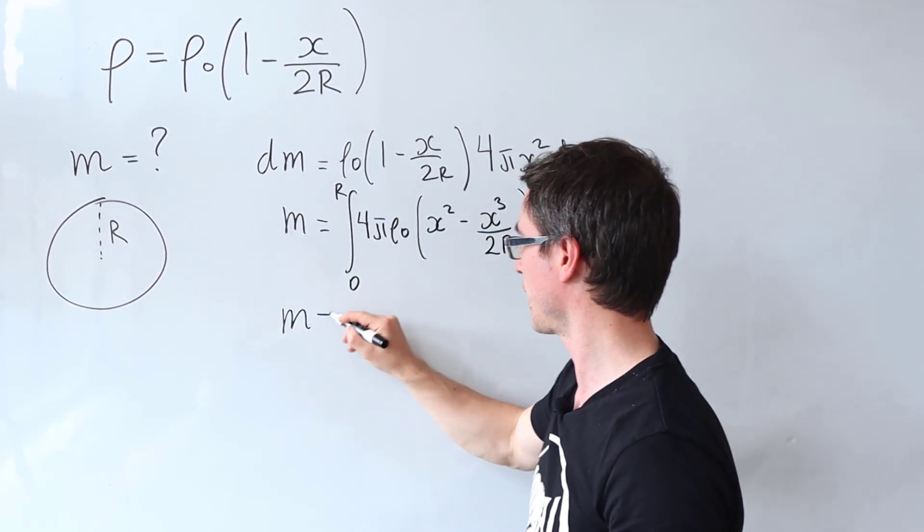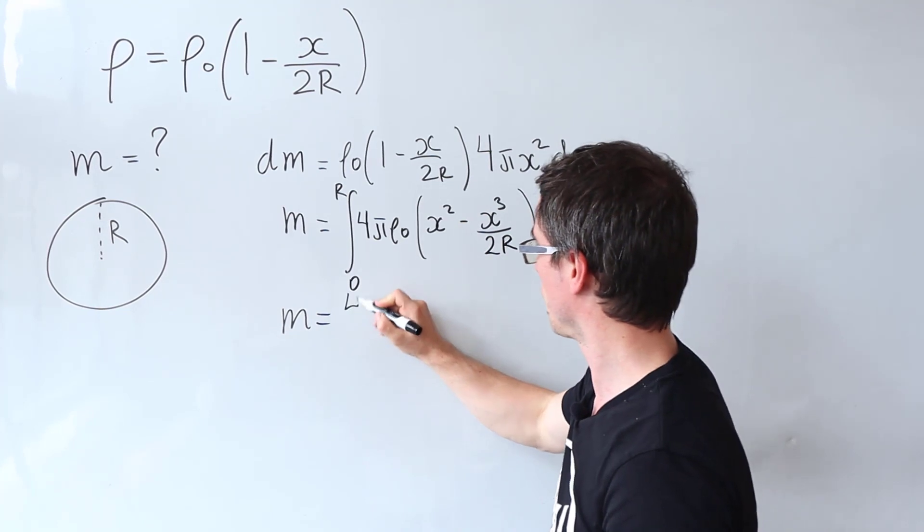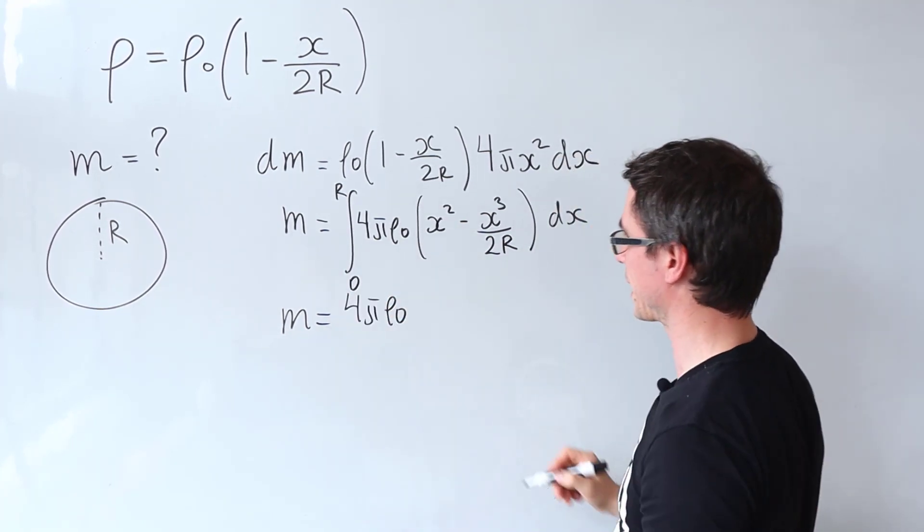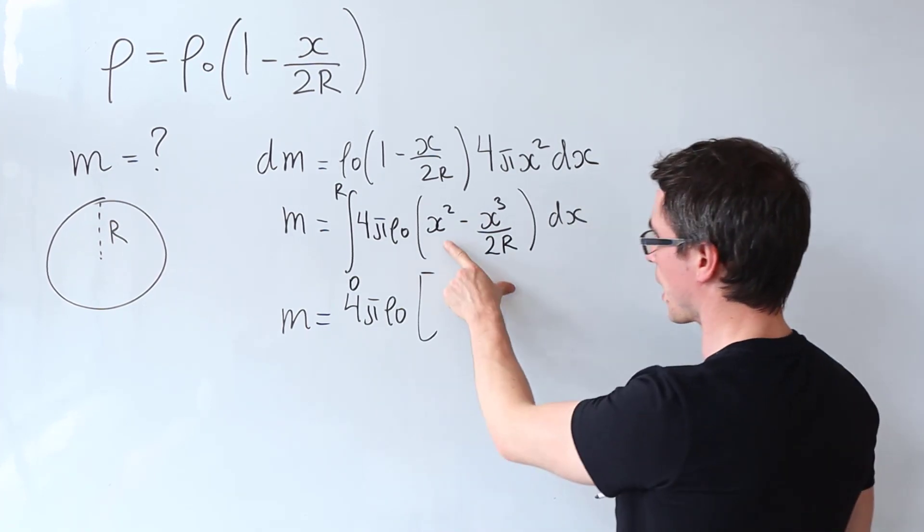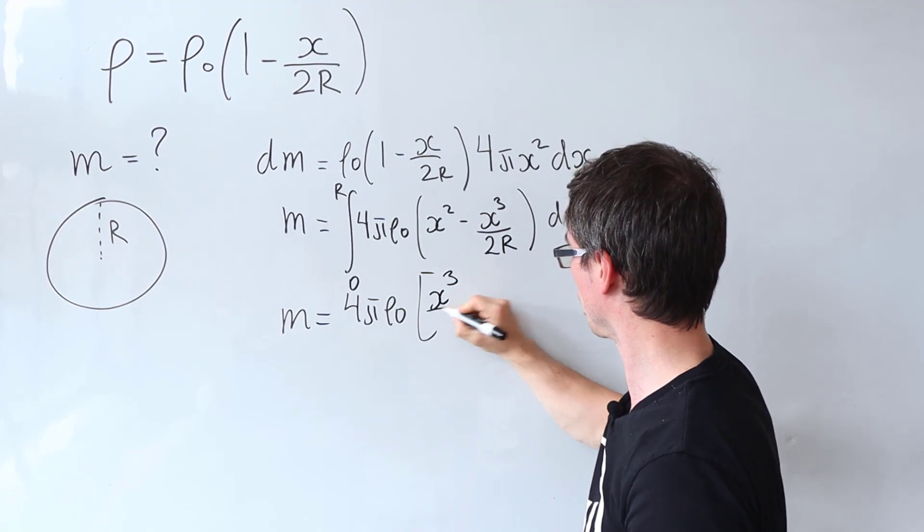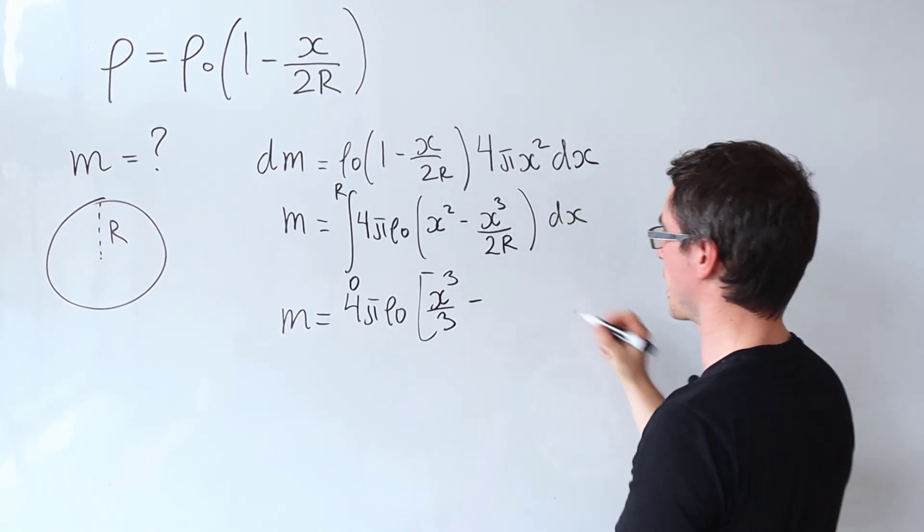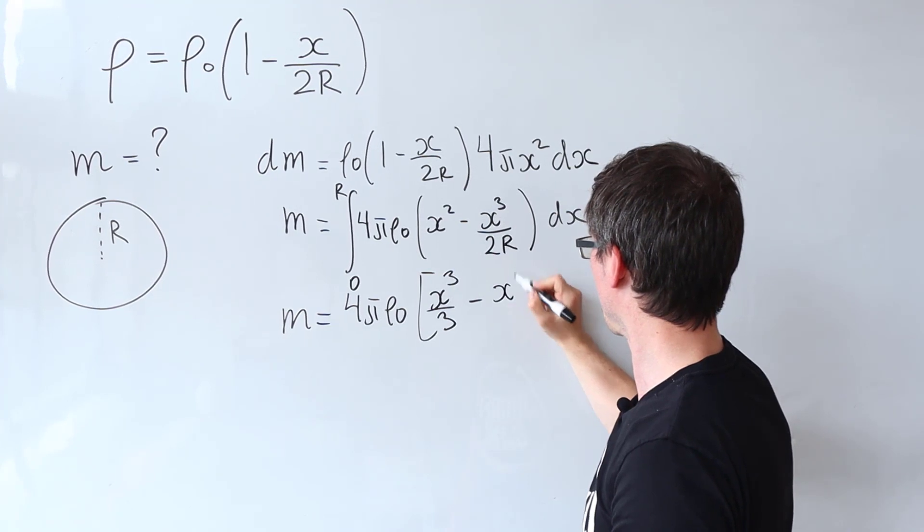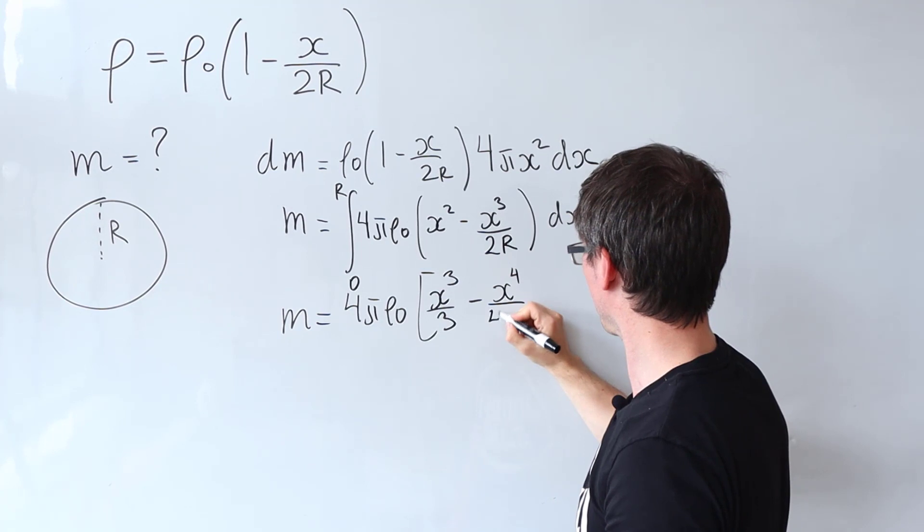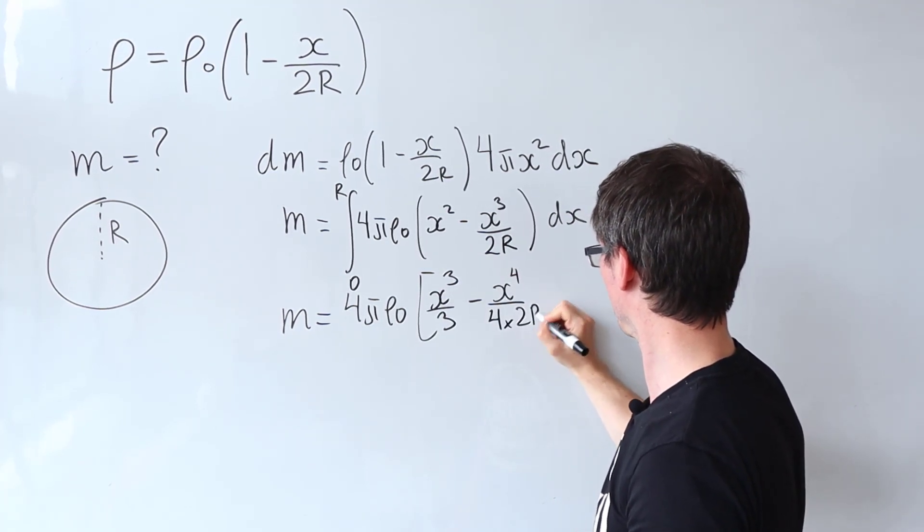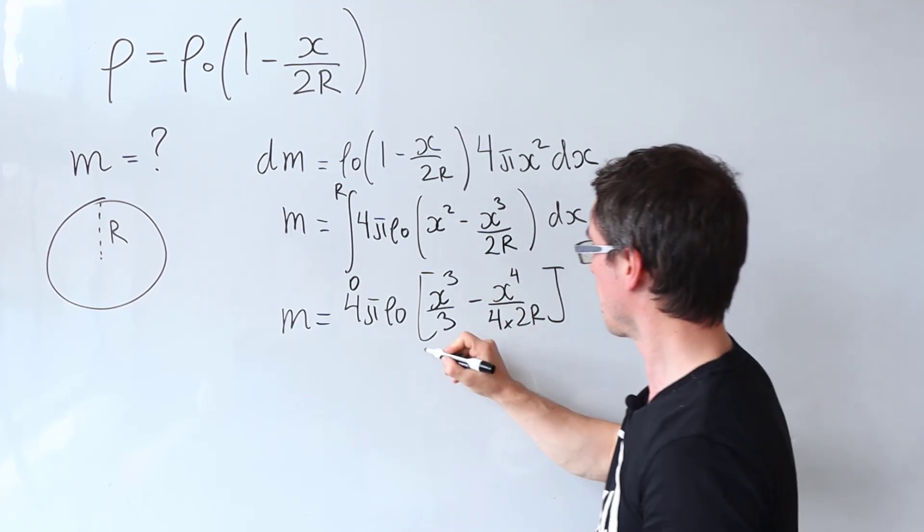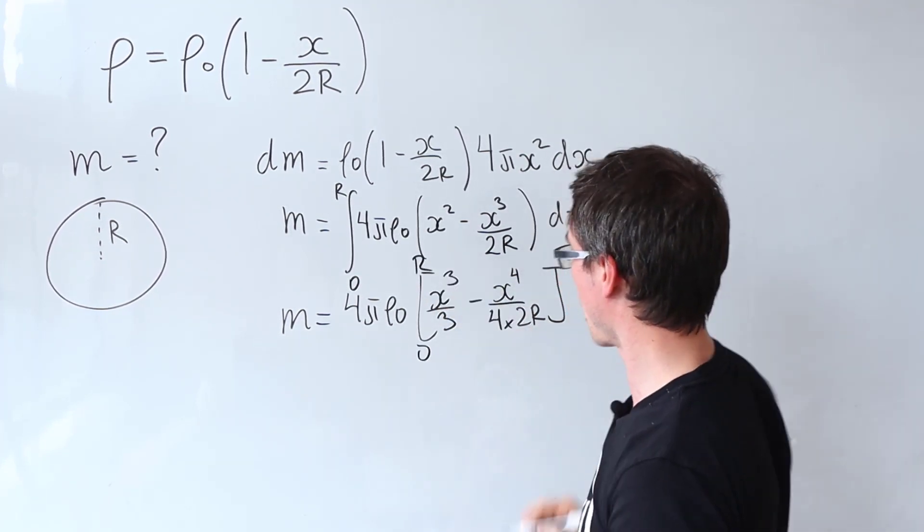So let's integrate. My total mass will be 4πρ₀. This thing is a constant so I can just take that outside of the integral sign. Now x² is going to give me x³/3. Then I'm going to take away x⁴ divided by 4 times 2r. And this integral will be evaluated between zero and r.